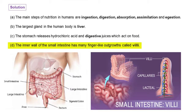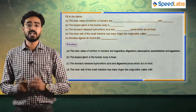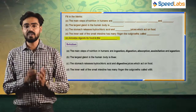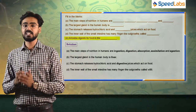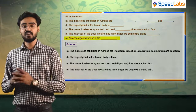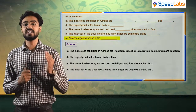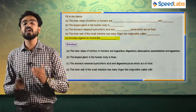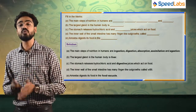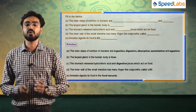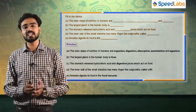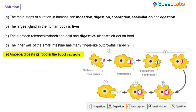Lastly, amoeba digests its food in its food vacuole. The amoeba surrounds the food and a food vacuole is formed.